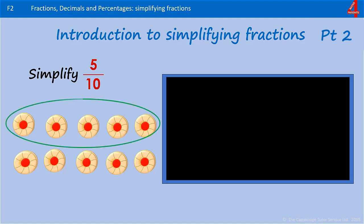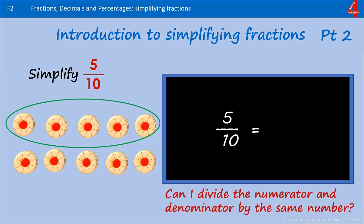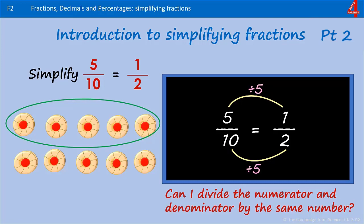If you circle 5 tenths, you can see that's a half. How do we get from 5 over 10 to 1 over 2? What can we divide both 10 and 5 by? Because we know our 5 times table, we know they can both be divided by 5. 10 divided by 5 is 2, 5 divided by 5 is 1, and that's how we get to 1 over 2.